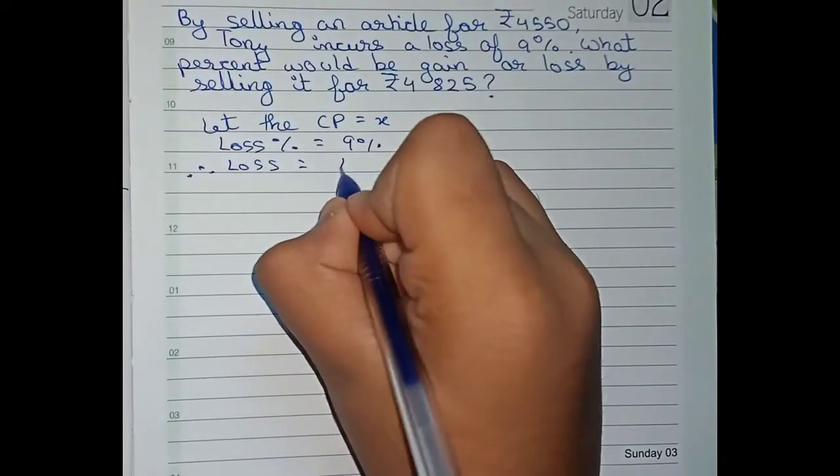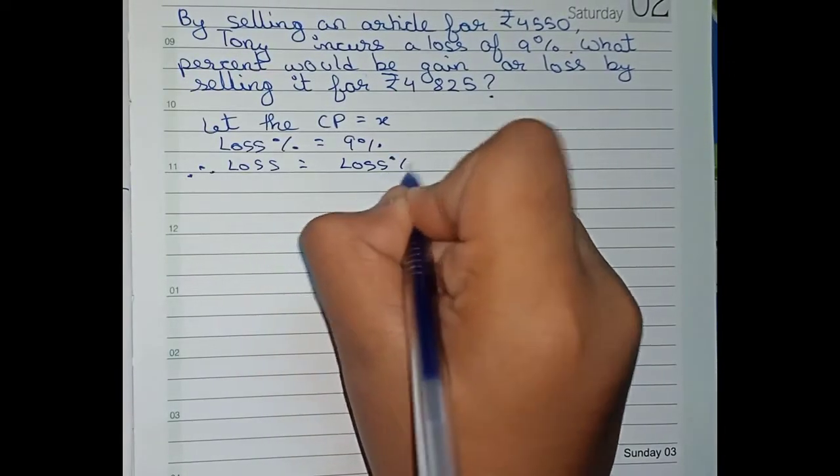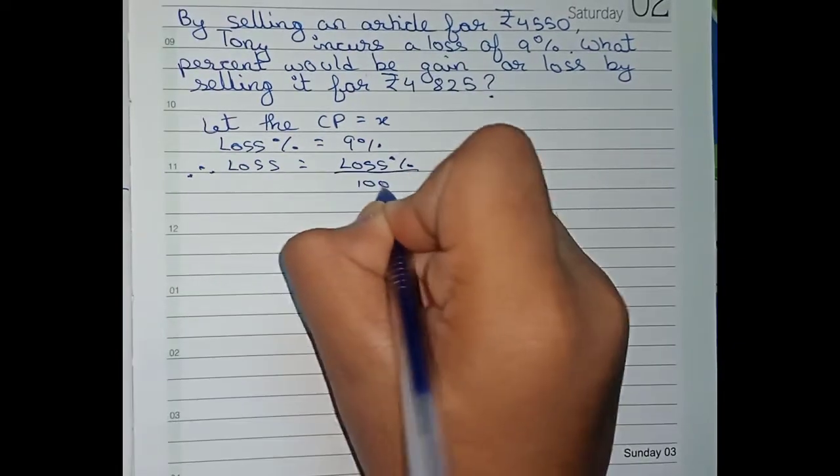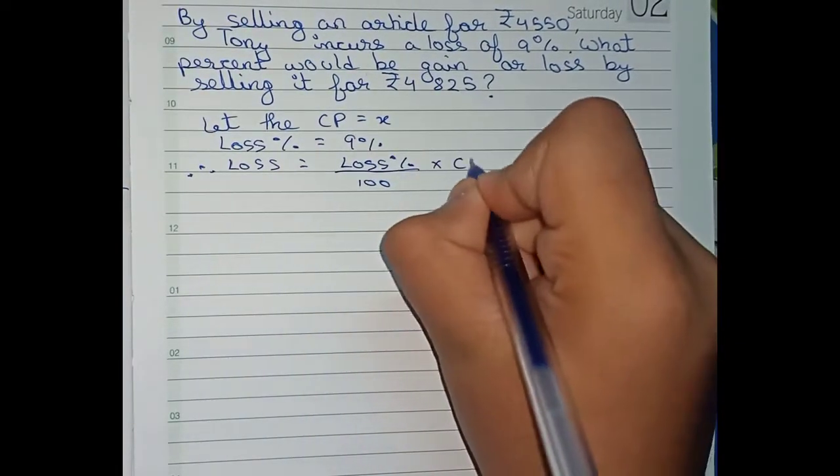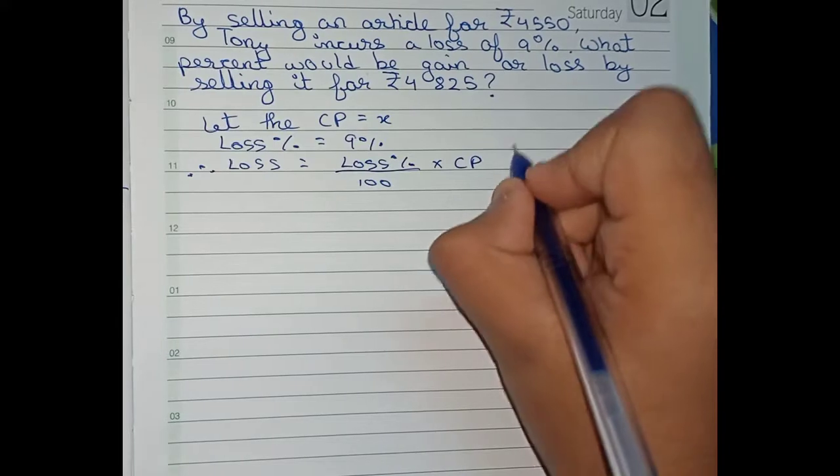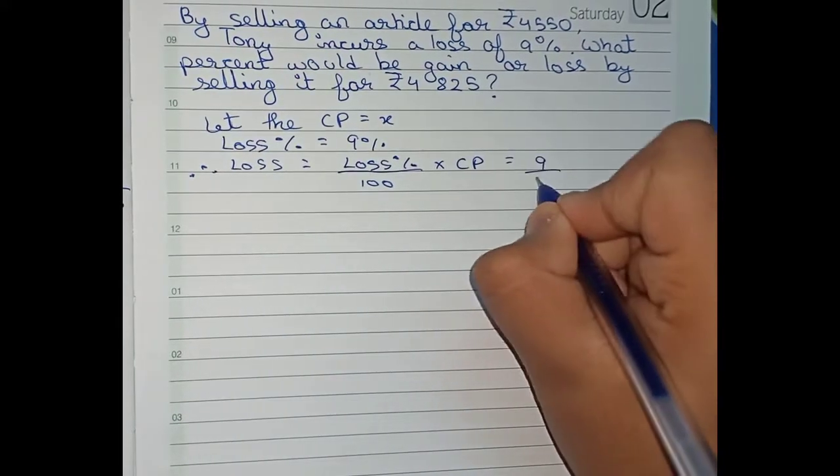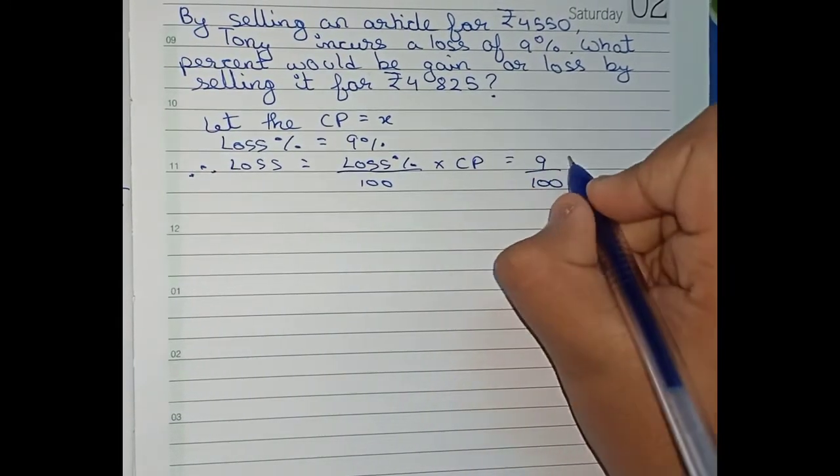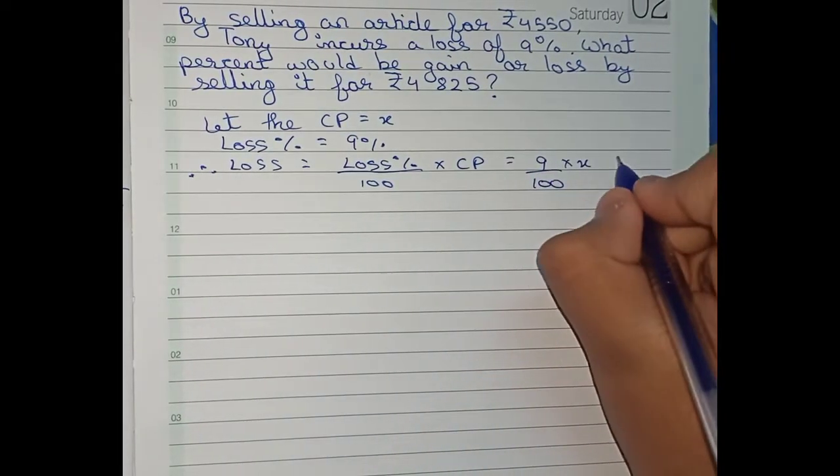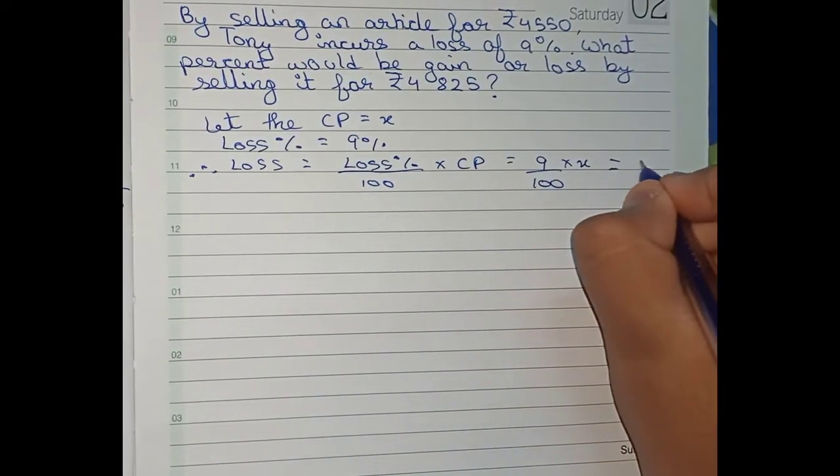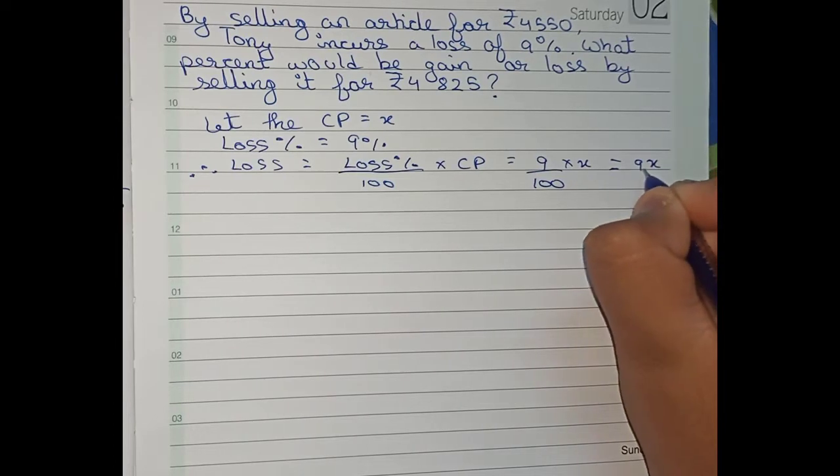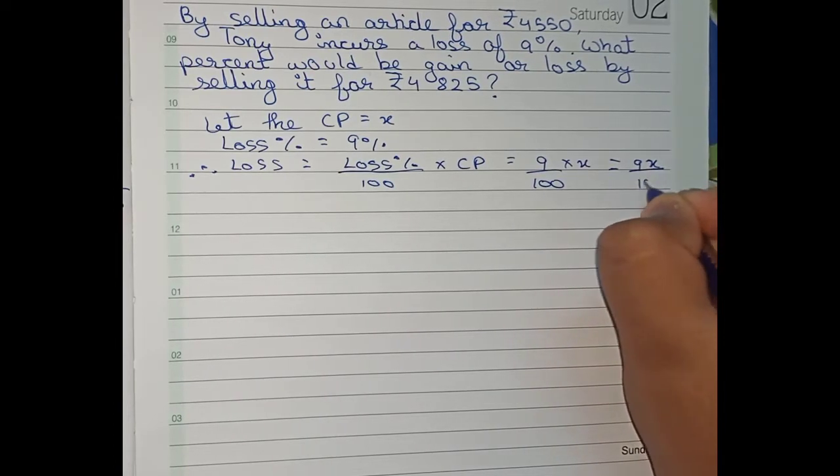So loss equals to loss percentage by 100, this is our formula, into CP. So loss percentage is 9 by 100 into x. As we have taken CP as x, we cannot cut it. So we will take it like this only, that is 9x by 100.